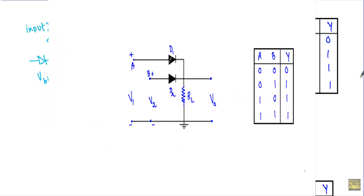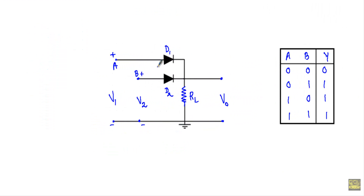This is the circuit structure of the diode OR gate. We have used two diodes D1 and D2. The N terminals of diodes D1 and D2 are connected to a common point, and we are taking the output voltage across our load resistor RL, which is connected between the common point and the ground terminal. We are applying the inputs at the P side of diodes D1 and D2.